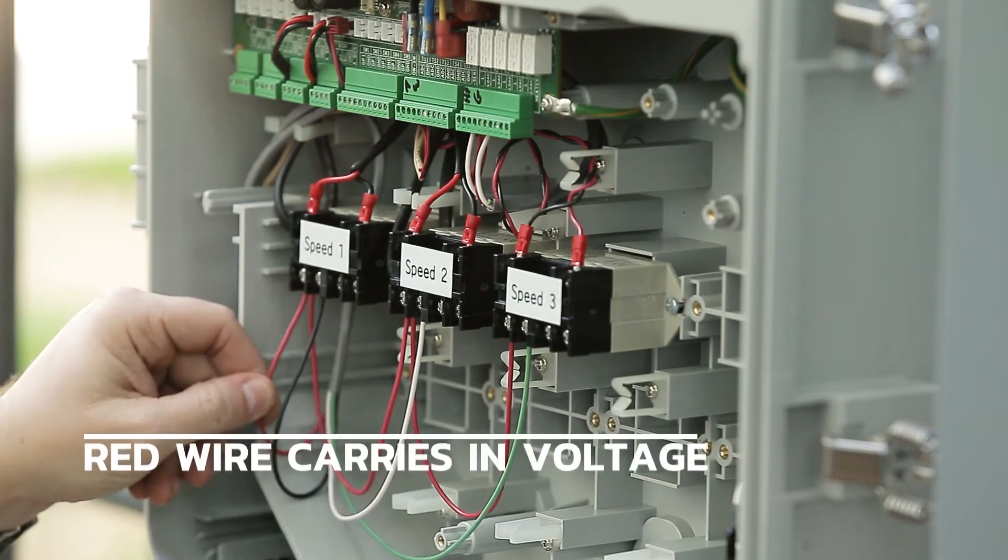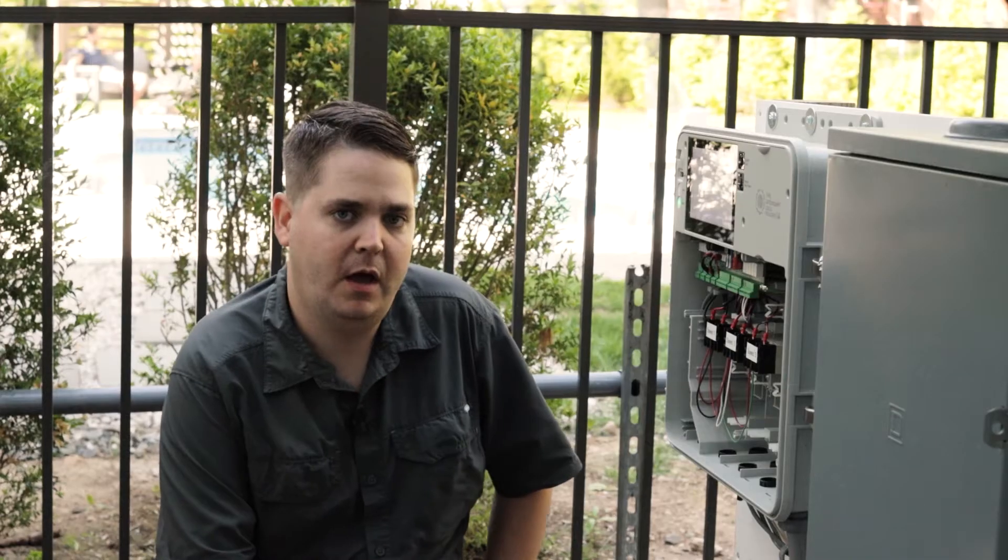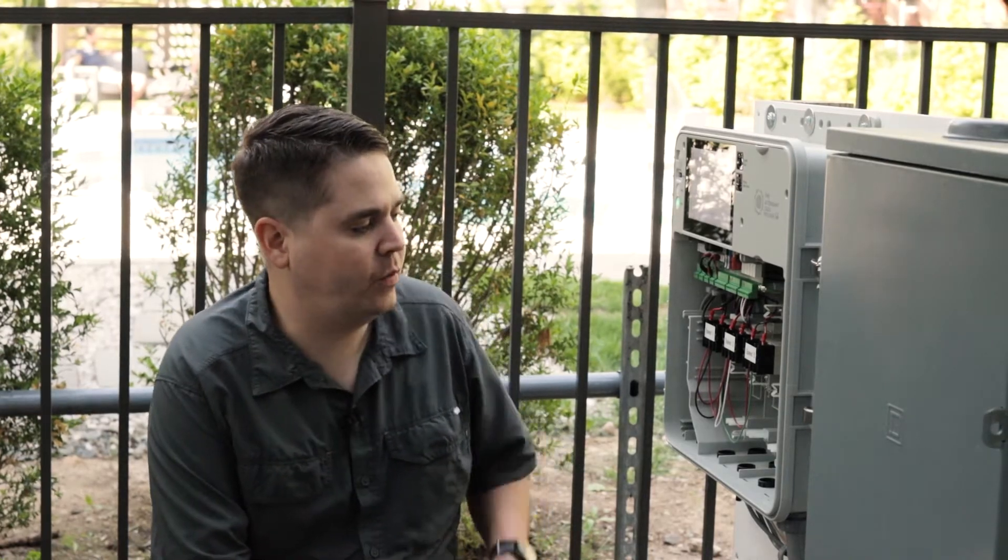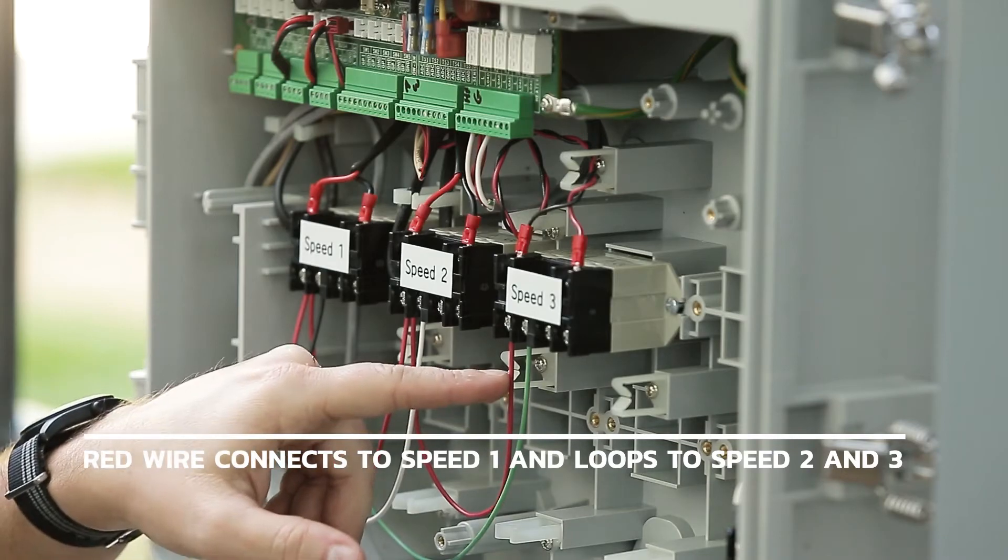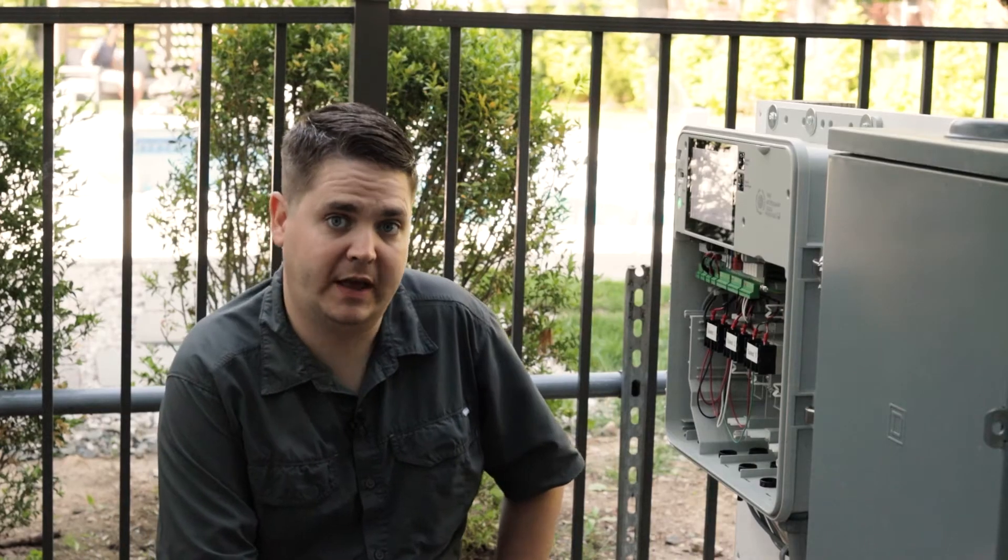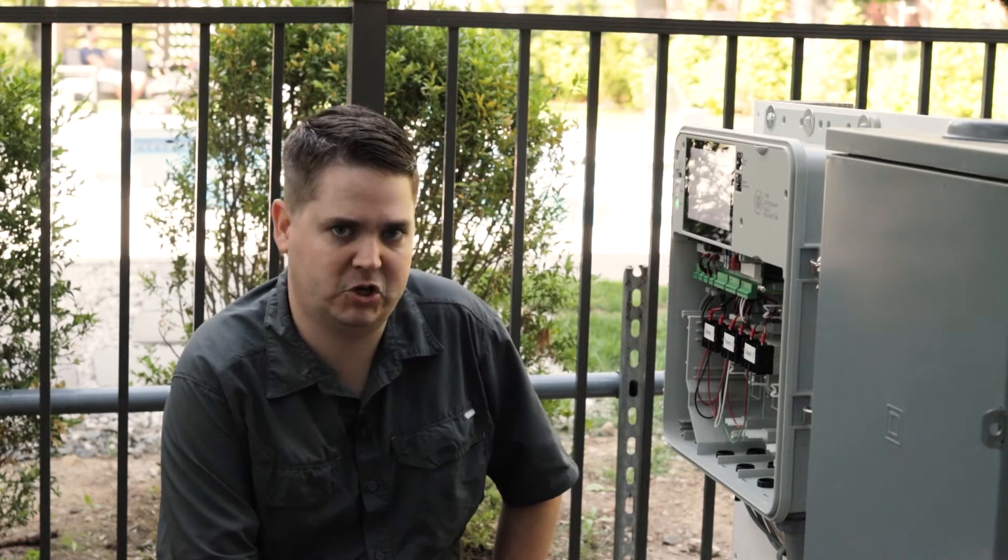We have a red wire which is carrying in the voltage. It is the bottom of the terminal on the back of the pump, and that is the one that we want to connect. You can see how it connects here and then loops over to connect to all three of these relays. These relays are a common design shared by almost every automation system out there.